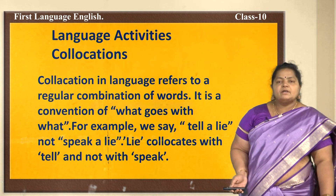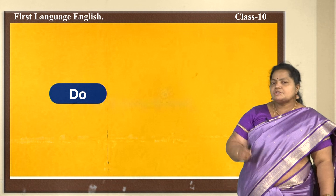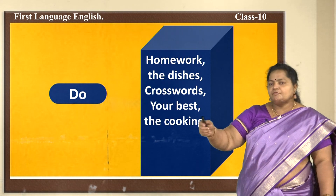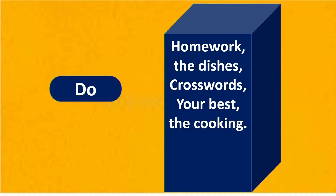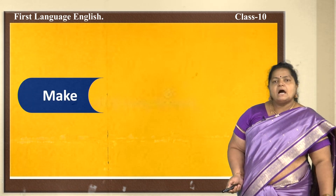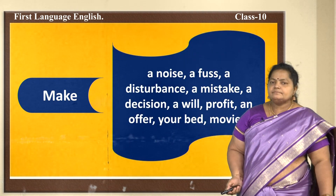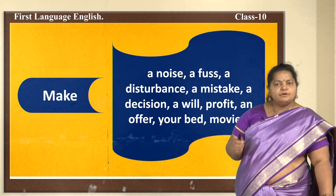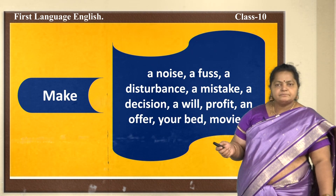Let us see how 'do' collocates with some words: do homework, do the dishes, do crosswords, do your best, do the cooking. The next one is 'make': make a noise, make a fuss, make a disturbance, make a mistake, make a decision, make a will, make profit, make an offer, make your bed, make movies.